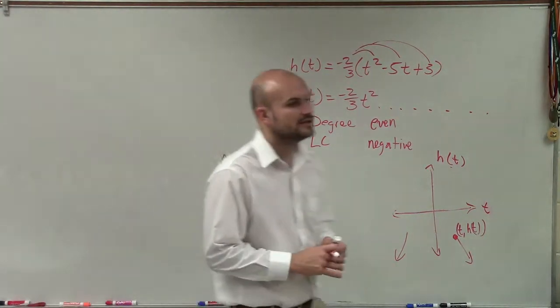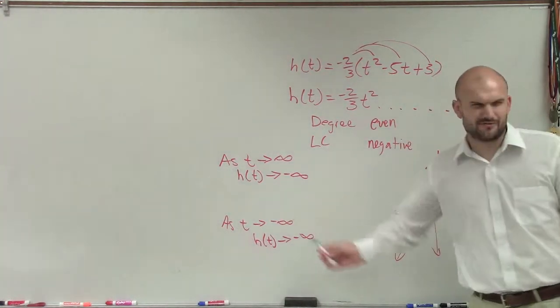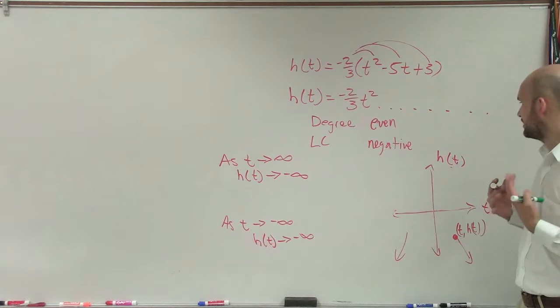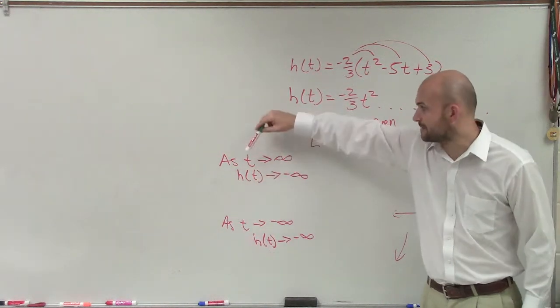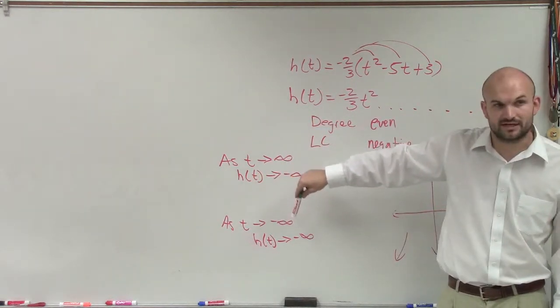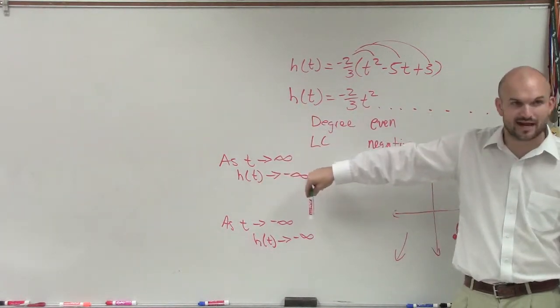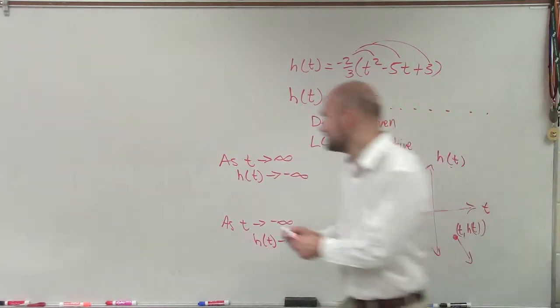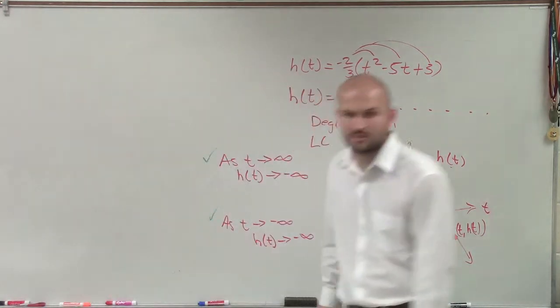The one thing to notice is when you're writing this out, I know a lot of you forget about this. First of all, these statements are always going to be the same. t isn't going to approach infinity, and t is going to approach negative infinity. If you're dealing with a function with x, x is going to approach infinity, and x is going to approach negative infinity. These two statements are going to be a part of every single end behavior statement that you make formally.